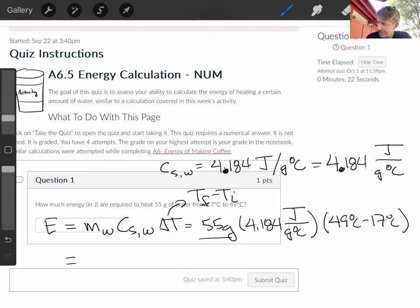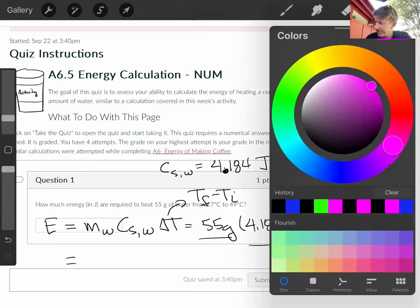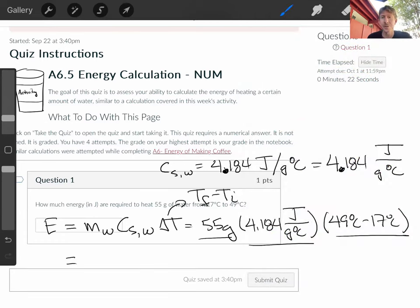We're going to multiply these three numbers. As far as units, the degrees Celsius cancel out because they're in the denominator. The grams cancel in the numerator and denominator. So our final units for this answer is going to be joules, which is what we're looking for.